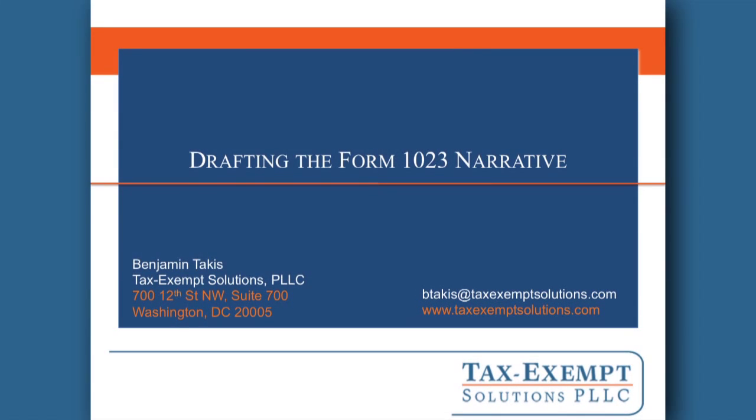Hi, I'm Ben Takis, Founding Attorney of Tax Exempt Solutions. Today we're going to talk about drafting the Form 1023 narrative. The narrative is part of the application for 501c3 status in which you tell the story of your organization and go into depth describing the organization's mission and activities. It's also the part of the application that's easiest to mess up and say the wrong thing, which can ruin your chances of qualifying for 501c3 status. So today I'll be laying out a method for drafting the narrative the right way.